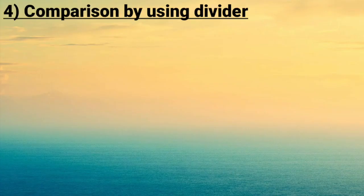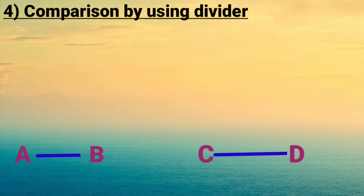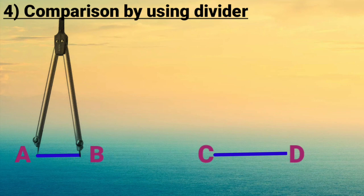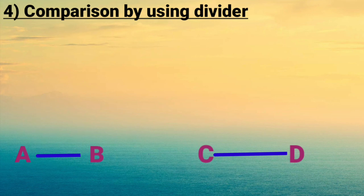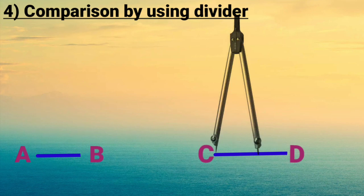So, the fourth method is comparison by using a divider. In this method, we place the openings of the divider on a line segment, and then we place them on the other line segment. Here we can easily find out which one is longer and which one is shorter. This is the most accurate method for comparing line segments.